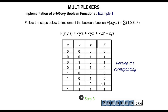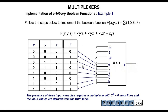In step 3, we connect the lines: x, y, z are the selection lines S0, S1, S2, and the input lines I0 through I7 will have 1 only at positions 1, 2, 6, and 7 — all others are 0. As you can see here, we have designed this Boolean function with an 8-to-1 line multiplexer.